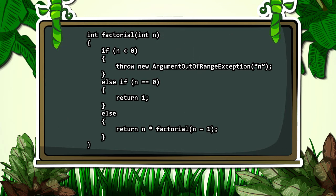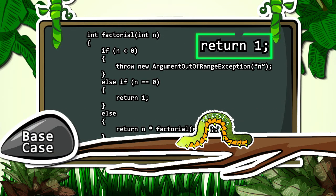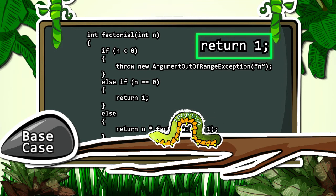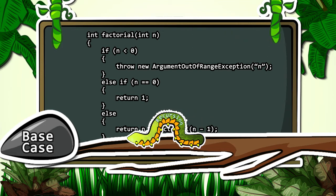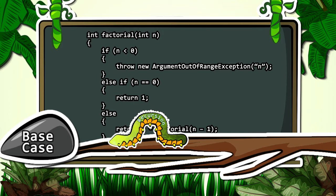When this happens, the factorial function returns a one. So each recursive call to the factorial function gets one step closer to the base case, the input being zero.